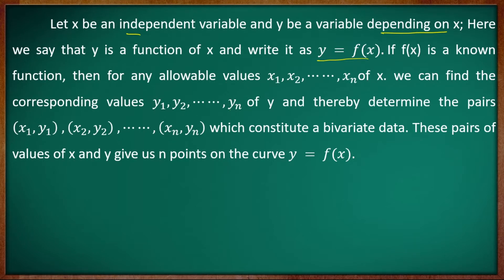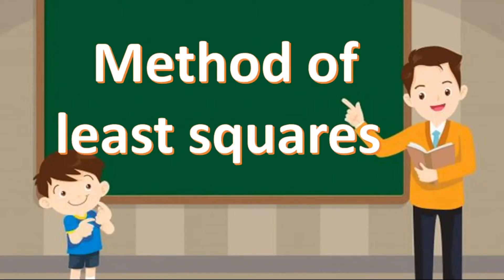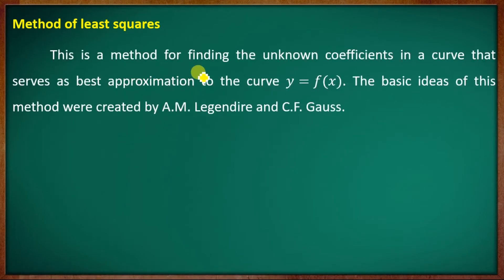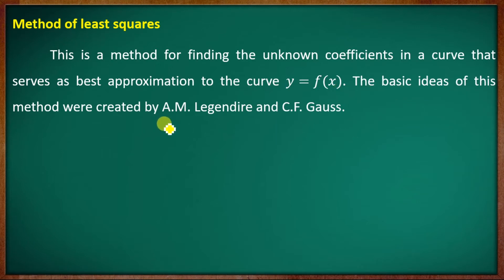For curve fitting, it is a process of constructing a curve and a mathematical function. This method is the least square method. We will discuss the least square method. What is the least square method? It is a method for finding the unknown coefficient in a curve that serves as a best approximation to the curve y equal to f of x. The basic idea of this method is the method of least squares.